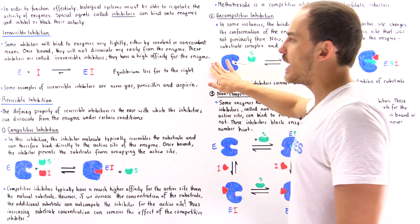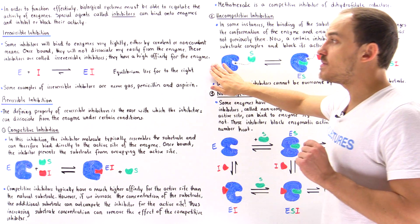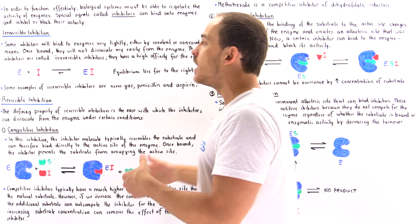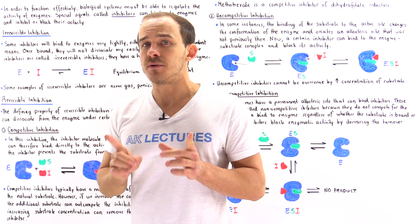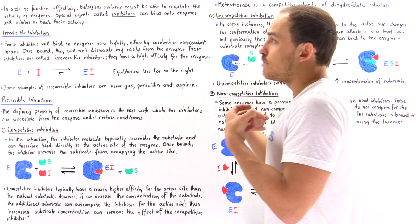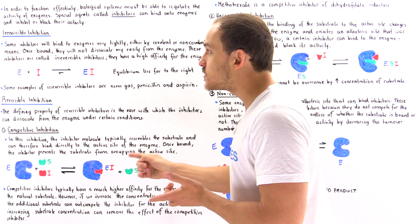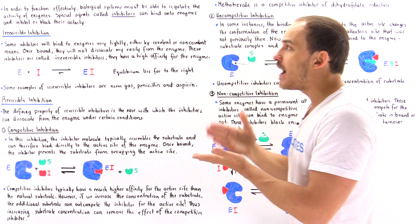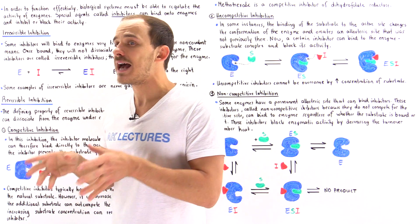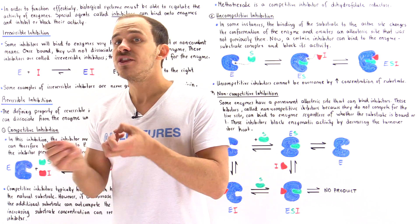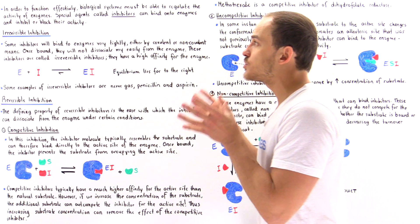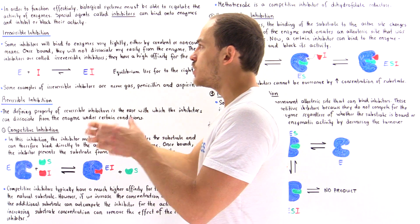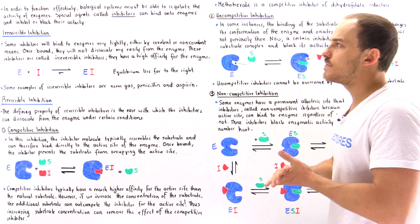One very common misconception about irreversible inhibition is that these inhibitors always bind covalently. That is simply not true — there are examples of molecules that inhibit irreversibly and yet only form non-covalent bonds. The defining point about irreversible inhibitors is that they bind very strongly and will not let go of that enzyme very easily. Once they bind, they change the conformation and essentially inhibit or block the activity of that enzyme.